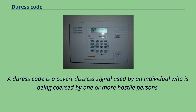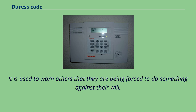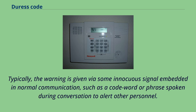A duress code is a covert distress signal used by an individual who is being coerced by one or more hostile persons. It is used to warn others that they are being forced to do something against their will. Typically, the warning is given via some innocuous signal embedded in normal communication, such as a code word or phrase spoken during conversation to alert other personnel.